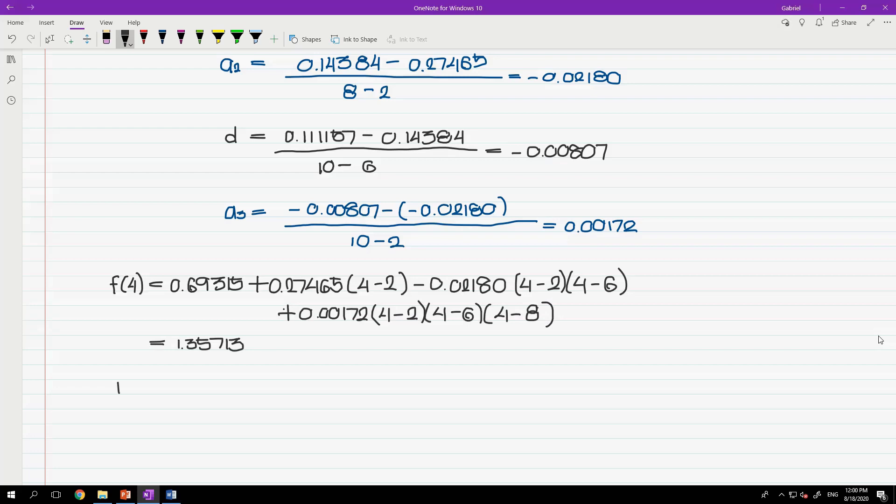Comparing this value to the exact solution will give us ln of 4 is equals to 1.38629 which is quite near to the interpolated value but may still be improved with the introduction of additional data points. So, that concludes our manual computation using Newton's interpolation.